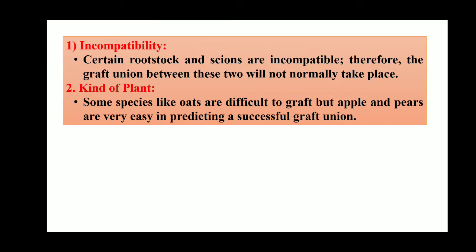Incompatibility: certain rootstocks and scions are incompatible, therefore the graft union between these two will not normally take place. We have to take care of this. Sometimes some species like oats are difficult to graft, but apple and pear are very easy in predicting their successful graft union. We have to take care of both compatibility and the type of plant — which crop, which plant we are using.